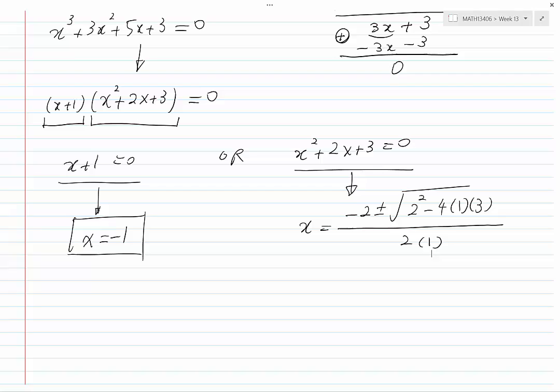And if I simplify this expression, I'd rather write this as x plus minus to indicate that there are two solutions here. Minus 2, plus or minus, and under the root, we will have 4 minus 12, which is minus 8, divided by 2.